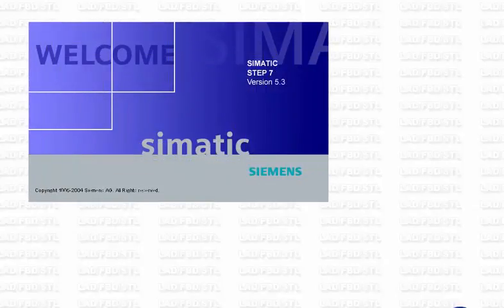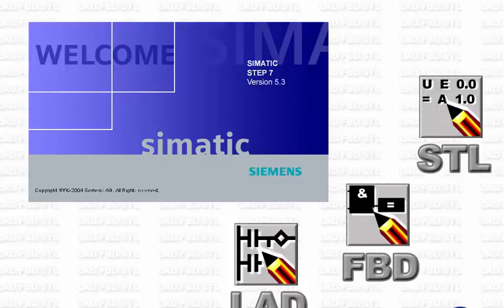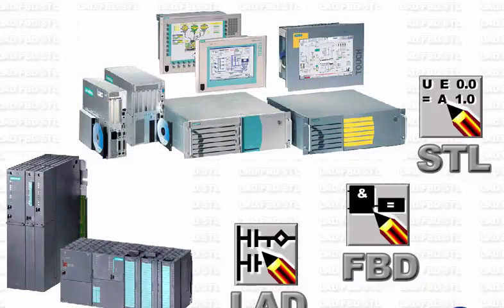The STEP7 basic software contains three programming languages: LADDER, FBD, and STL. The languages are defined in IEC 61131-3 and are easy and intuitive to learn. All three languages offer an extensive inventory of functions that can be used on the whole range of SIMATIC controllers. You are therefore free in your choice of hardware platform and can employ the same user programs even if your application comprises different SIMATIC controllers.